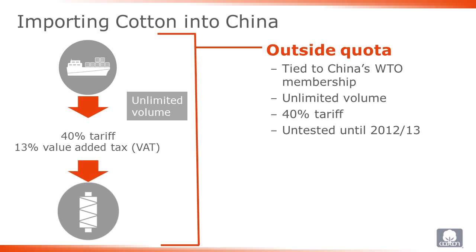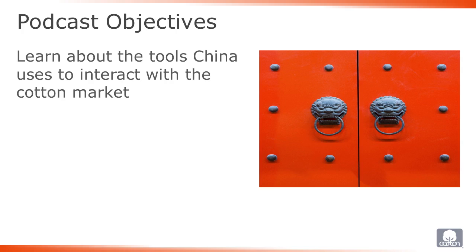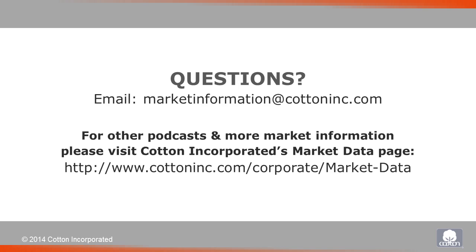During these time periods, the threat of increased Chinese imports supported world prices and was a likely factor preventing them from decreasing further relative to prices in China. That brings us to the end of this podcast. The purpose of this episode was to provide an introduction to the policy tools that the Chinese government uses to interact with the cotton market. It is hoped that this overview is helpful for the discussion of how Chinese policies have influenced global cotton price direction in the next part of this series. If you are interested in more information, please listen to the other podcasts, or you can email at the address shown. Thank you for your interest.